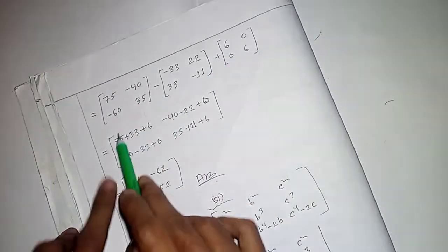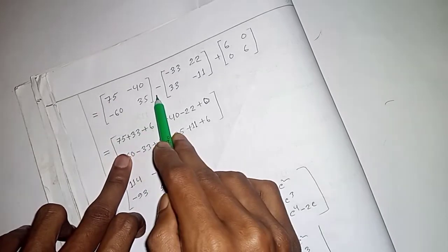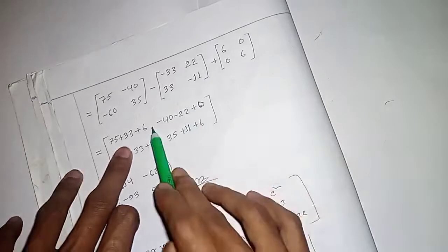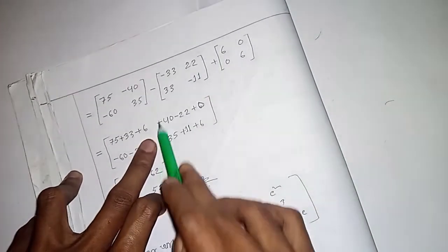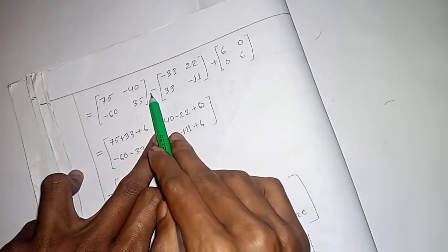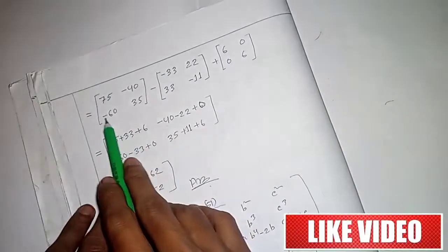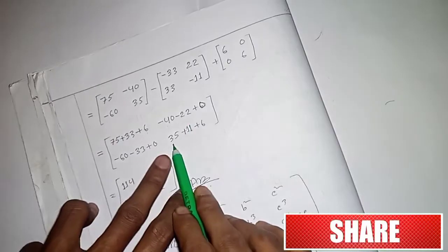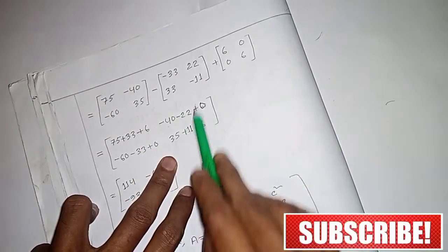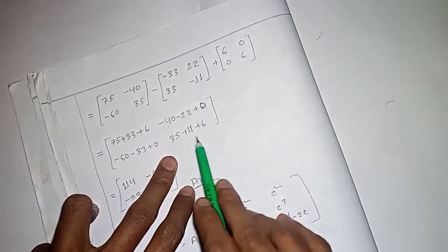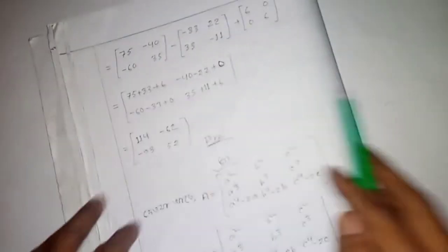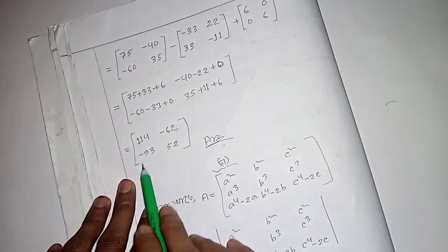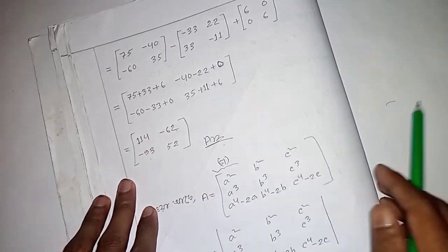The number is 0. So the numbers are: 75, minus 35, minus 35, plus 6, plus 33, plus 6, minus 4, minus 22, plus 0, minus 60, minus 33, plus 0, minus 32, minus 35. Minus minus, plus 11, plus 6. So: 1, 1, 4, minus 62, minus 93, minus 52.